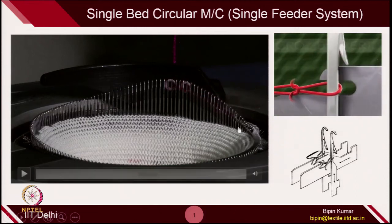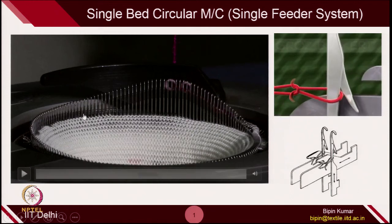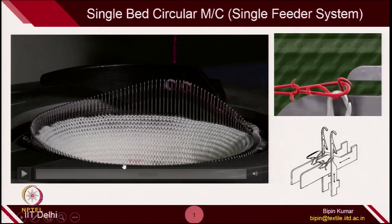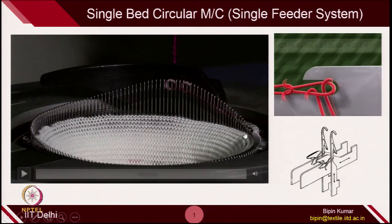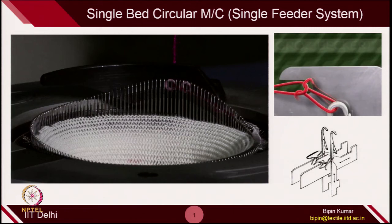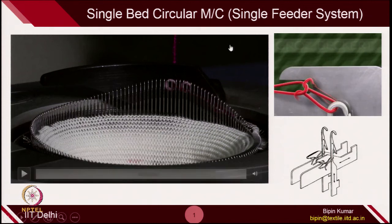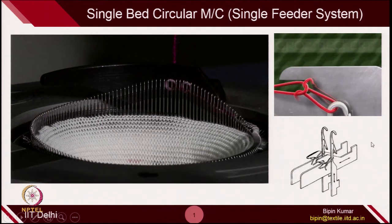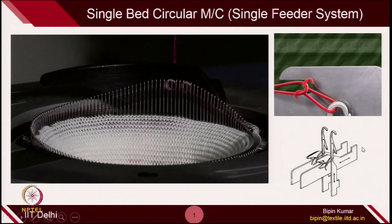Now we are going to see how we place yarn in this particular machine, what happens at the initial stage, how the fabric is created, and how you can make different designs using this type of machine. This is the most simple machine in circular knitting. It is single bed — just one bed is used — and also it's a single feeder system, so just one yarn is used in the knitting process.